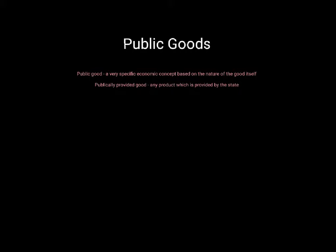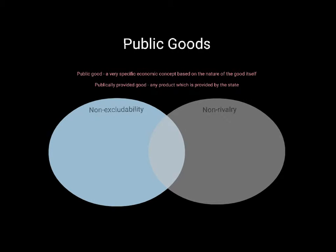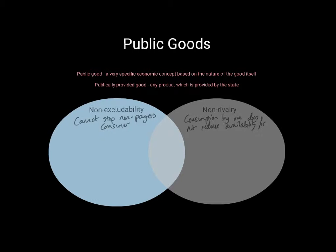To think about public goods properly, we need to consider two concepts: non-excludability and non-rivalry. Non-excludability means that a provider cannot stop non-payers from consuming — the organisation providing the good has no way of excluding non-payers or preventing them from benefiting from the product. Non-rivalry means that consumption by one does not reduce availability for others.